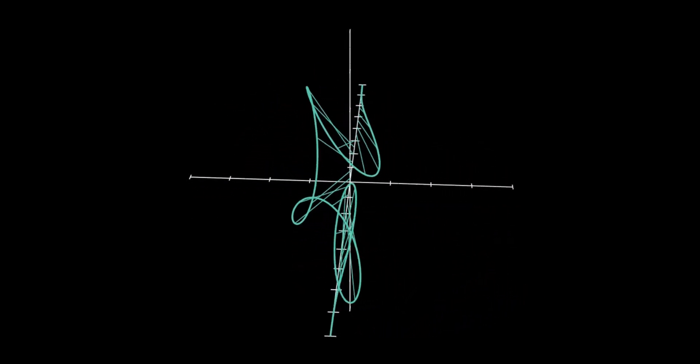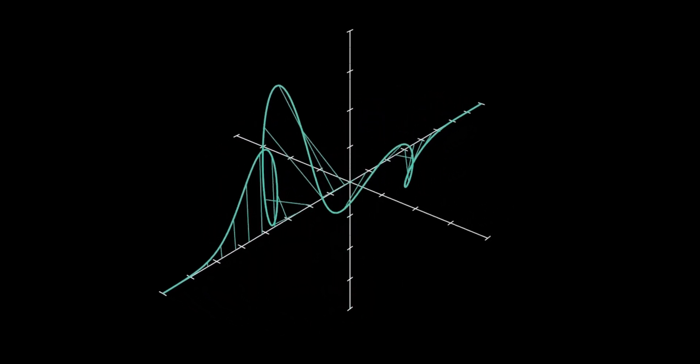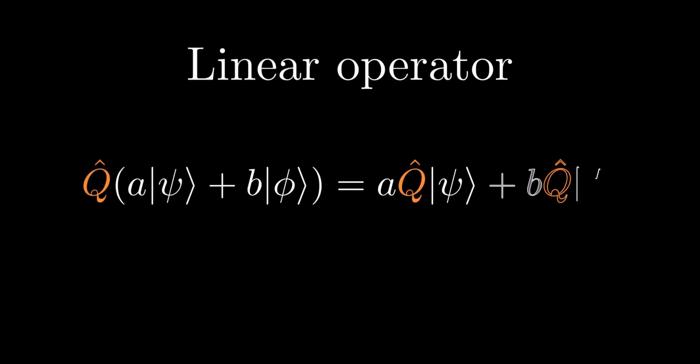In chapter one, we have associated kets with the quantum states. We shall now discover the physical significance of linear operator in quantum mechanics. An operator Q is linear if it satisfies the following equation.